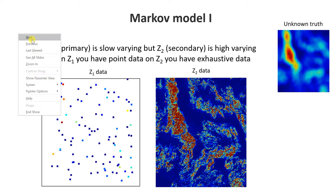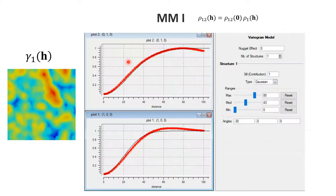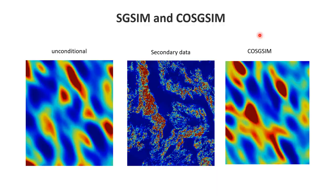In Markov model 1, if you want to do sequential Gaussian simulation with co-kriging, we perform normal score transformations. We take our analog data, do normal score transformations, and observe correlation coefficients. We model essentially the primary variogram, calculate the correlation coefficient, and multiply the primary variogram by the correlation coefficient to get the cross variogram. Once we have the primary variogram and the cross variogram, that is enough to do co-located co-kriging — we do not need the secondary variogram.